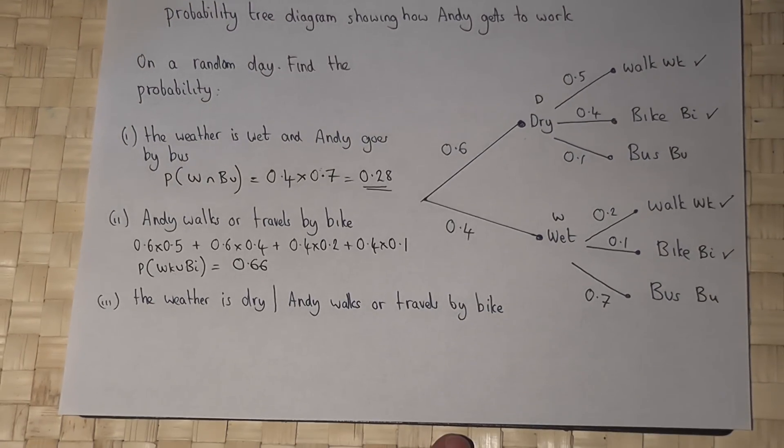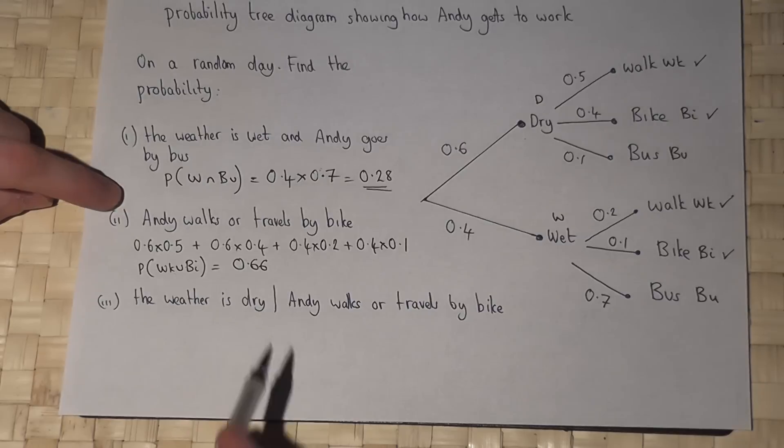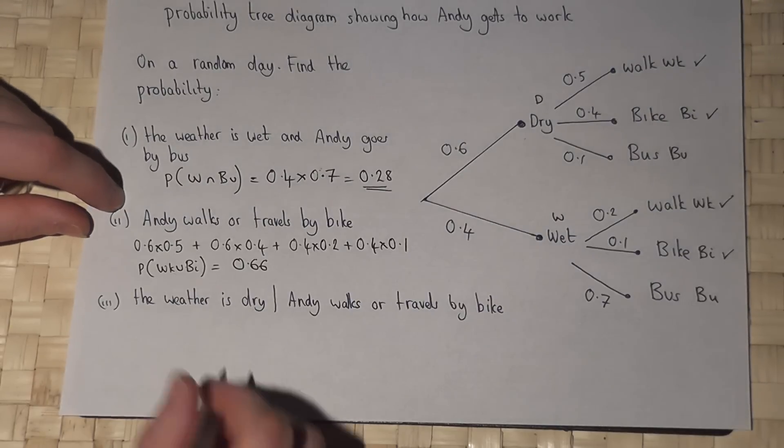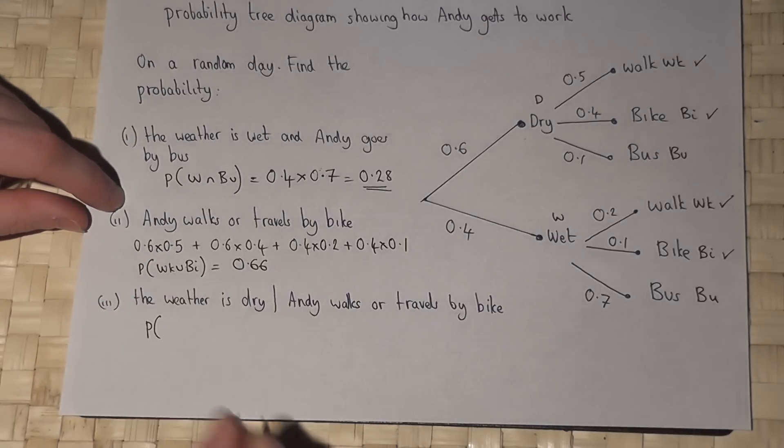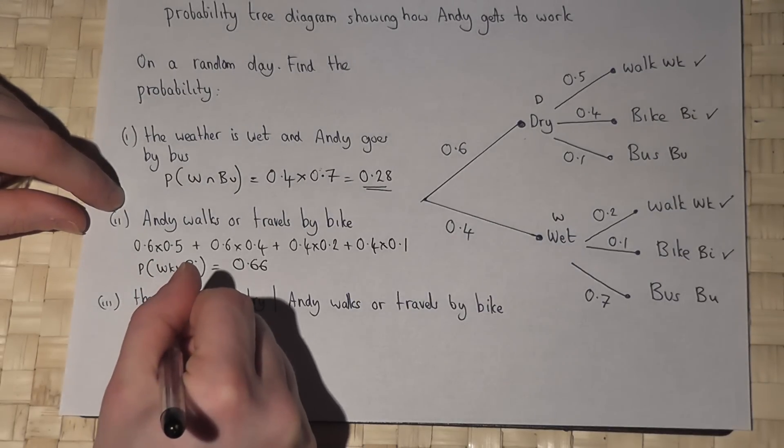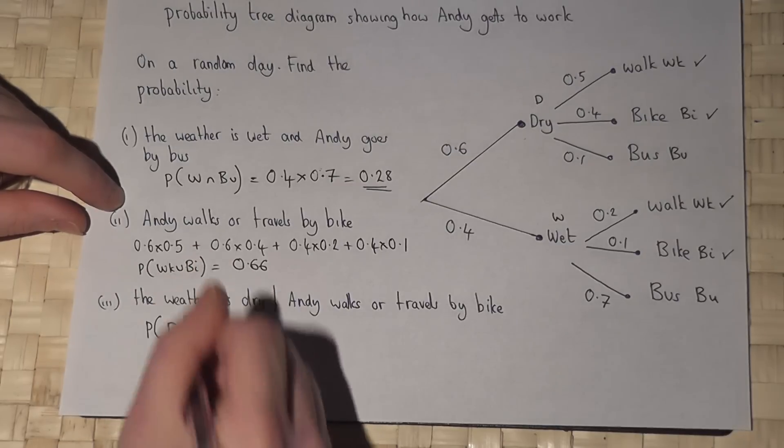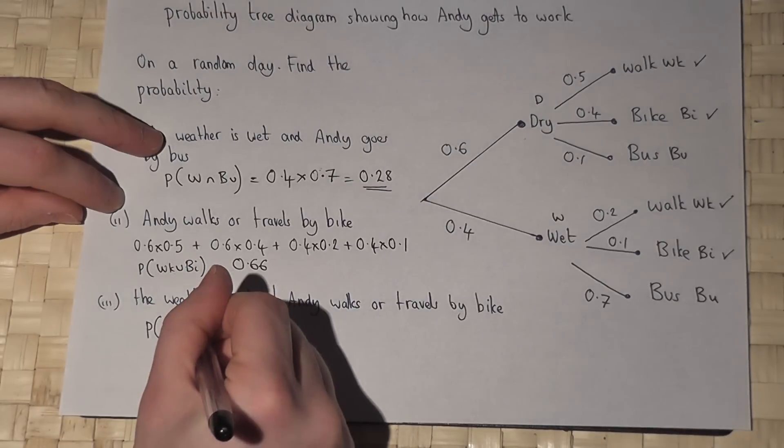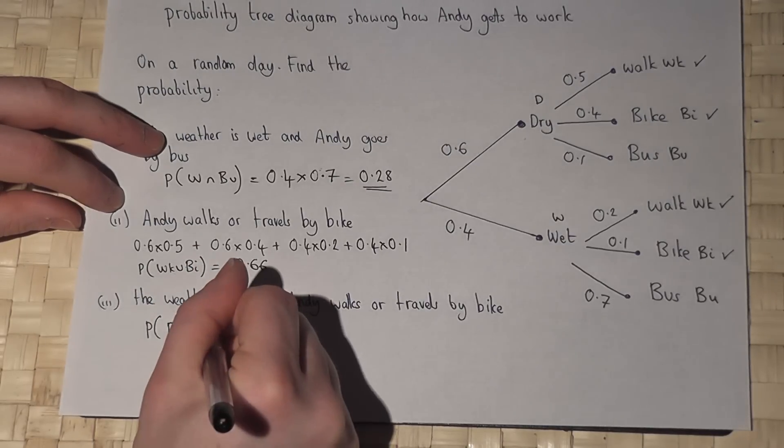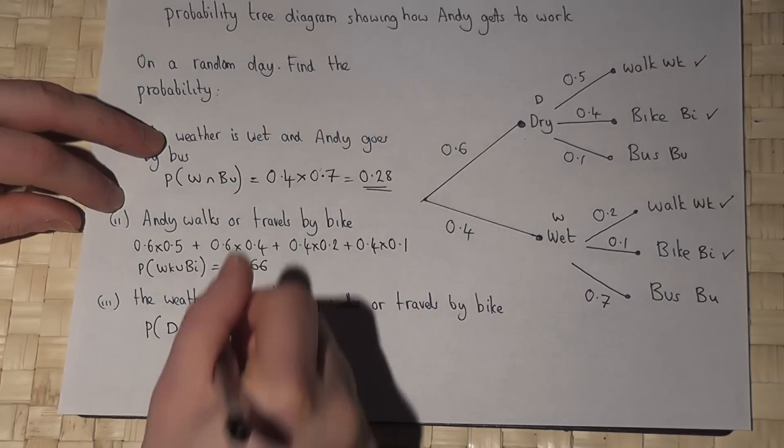Now the final part of the question is a conditional question. The question says what's the chance the weather is dry, which is D, given that Andy walks or travels by bike.